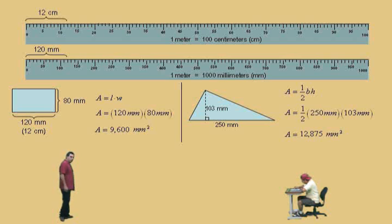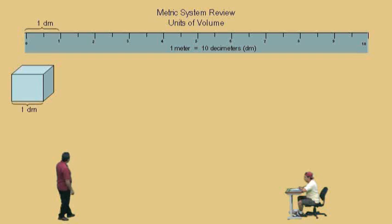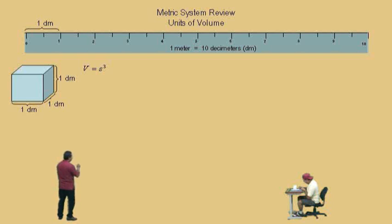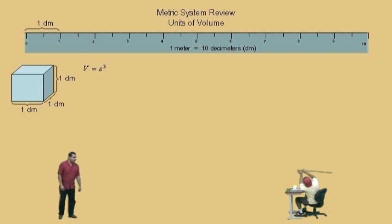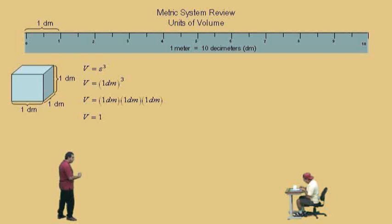Now let's do some volume problems — don't get scared. One meter is 10 decimeters. Here's a cube where the length, width, and height are all 1 decimeter. The volume of a cube is side length cubed, because length times width times height are all the same. So 1 decimeter cubed equals 1 decimeter times 1 decimeter times 1 decimeter, which is 1 decimeter cubed.